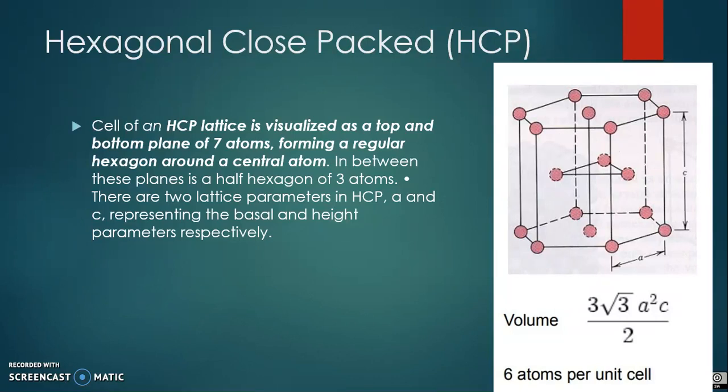The middle layer has three atoms nestled in the triangular grooves of the top and bottom plane. Note that there are six of these grooves surrounding each atom in the hexagonal plane, but only three of them can be filled with atoms.